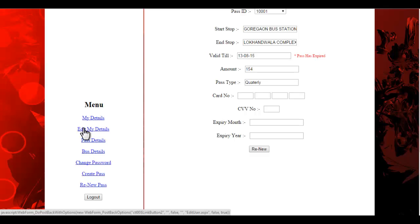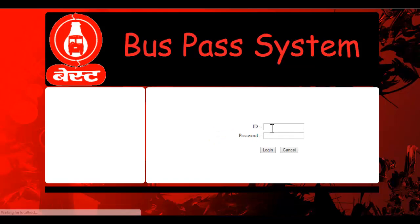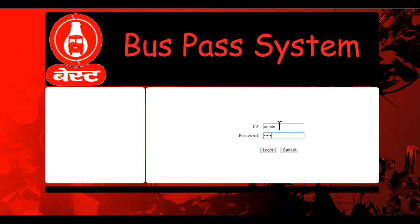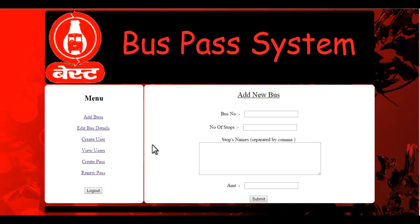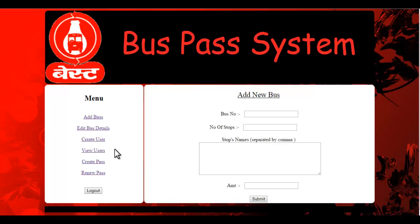You can also go back and change your password or edit your own details. Now let's see the admin module — entering the admin ID and password. This is the admin module where you can add a bus, create a new user, view existing users, and create or renew passes for them.